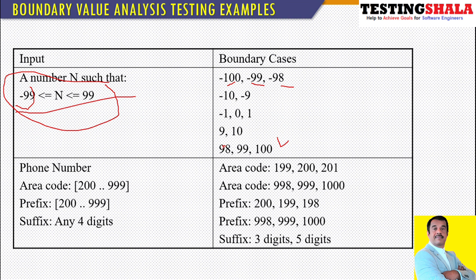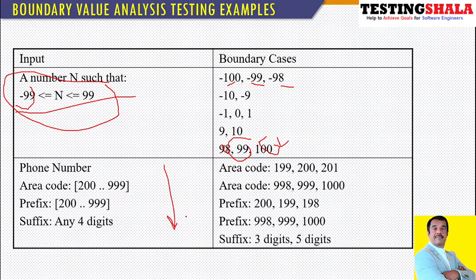Similarly, we have positive cases. 98 is the data which is inside, 99 is within the boundary, and 100 is an extreme condition. Similarly, we have to see other combinations.